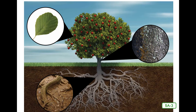Do you know why leaves are such an important part of a tree? Leaves are important because they enable the tree to produce food. Another important part of the tree is the outside layer called the bark. The bark protects the tree from outside forces such as heat, cold, insects, and bacteria.